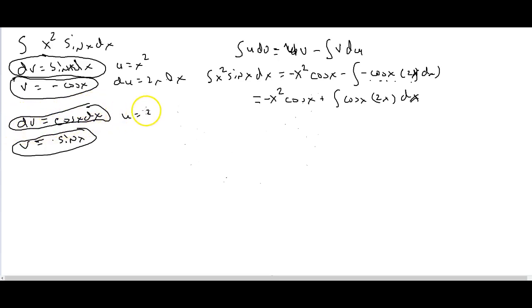My u therefore is going to be equal to 2x, so therefore my du is going to be equal to 2 dx. Alright, so therefore I've got everything I need to repeat the whole thing again.